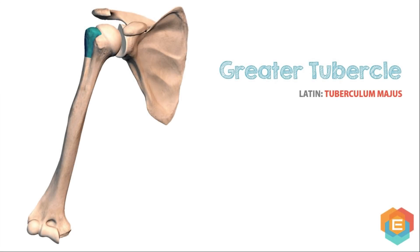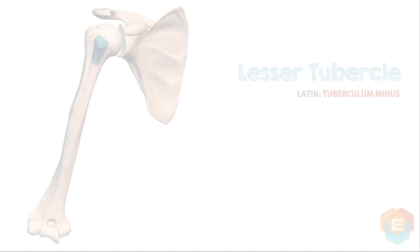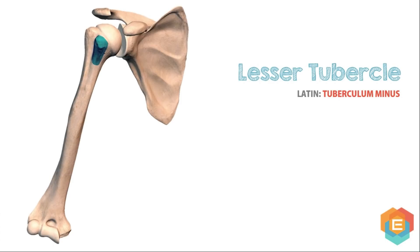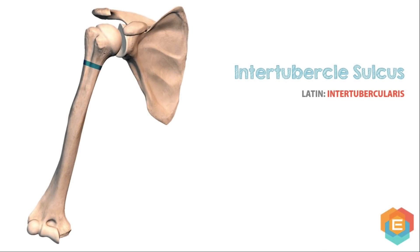3. Greater tubercle, which is one of the most lateral components of the proximal end of the humerus. 4. Lesser tubercle, which is a minor elevation on the front of the upper end of the humerus, just above the surgical neck, and supplies connection to the subscapularis muscle. 5. Intertubercular sulcus, or bicipital groove, which is a vertical groove between the lesser and greater tubercles.